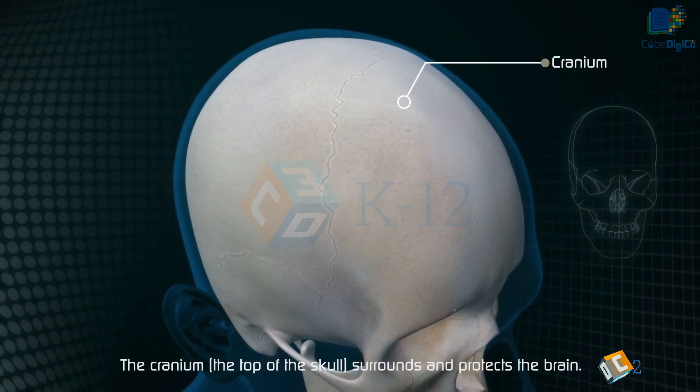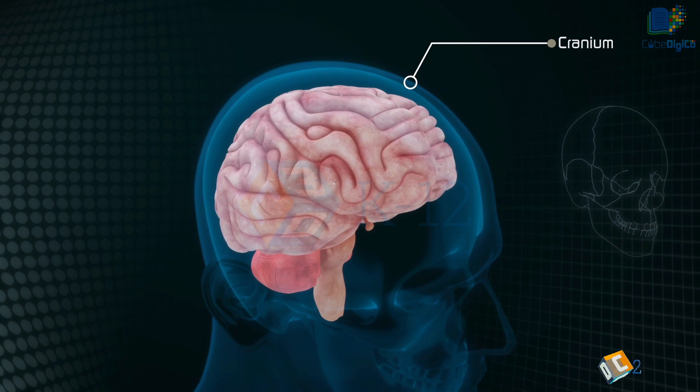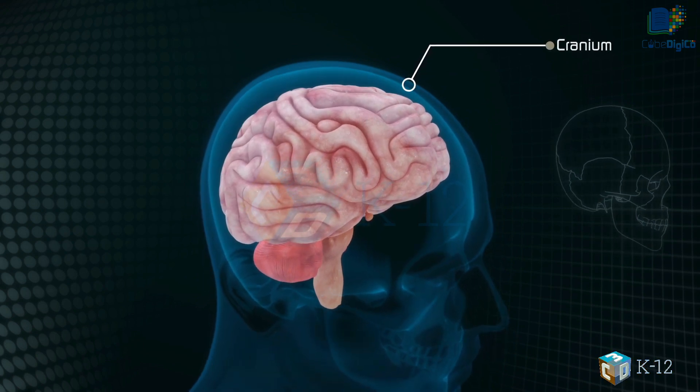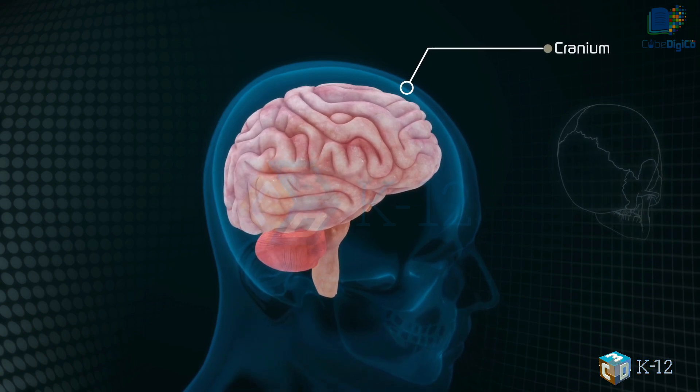The cranium, the top of the skull, surrounds and protects the brain. The brain is the source of all qualities that define our humanity. The brain is the supreme organ of the human body and is like a committee of experts.